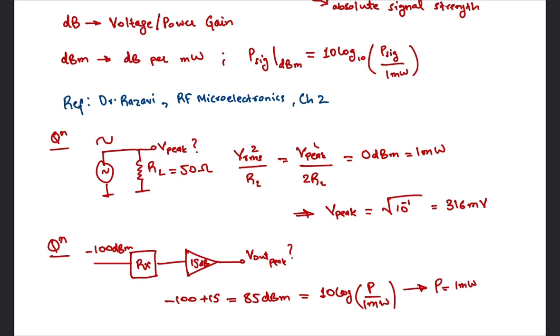So the signal power is 1 milliwatt times 10 raised to minus 8.5 which is equal to Vp squared over 2 RL. Now since there's no information related to the load resistance we typically assume a 50 ohms impedance. Thus Vp equals to 10 raised to minus 4.75 which comes out to be 17.78 microvolts.